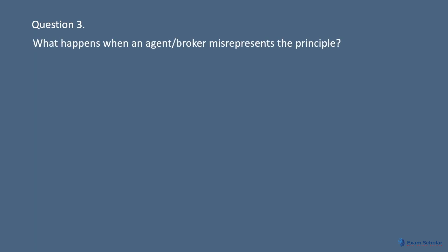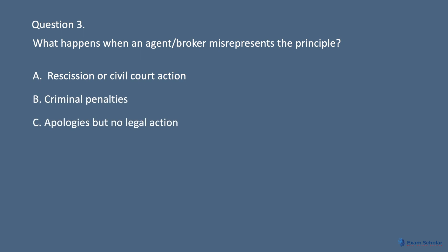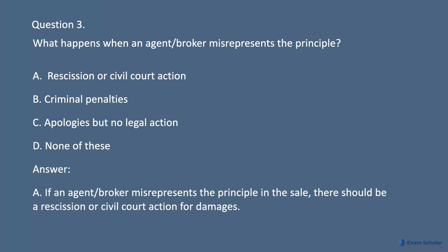Question 3. What happens when an agent/broker misrepresents the principal? A. Rescission or civil court action. B. Criminal penalties. C. Apologies but no legal action. D. None of these. Answer: A. If an agent/broker misrepresents the principal in the sale, there should be a rescission or civil court action for damages.